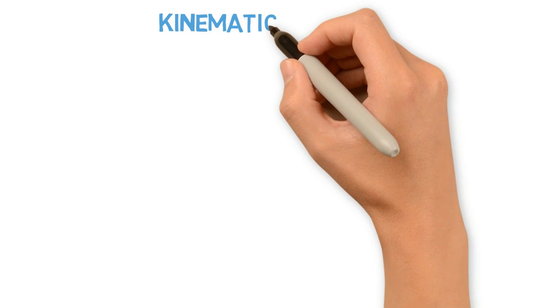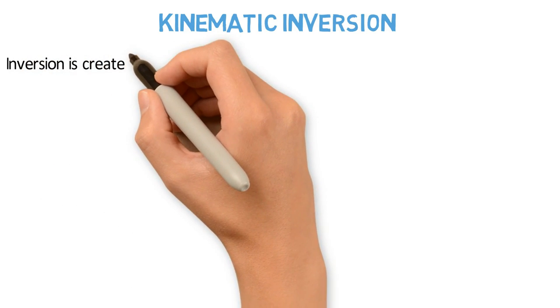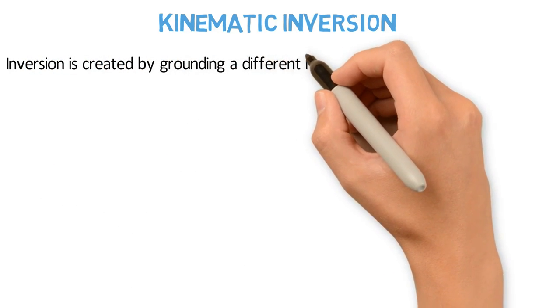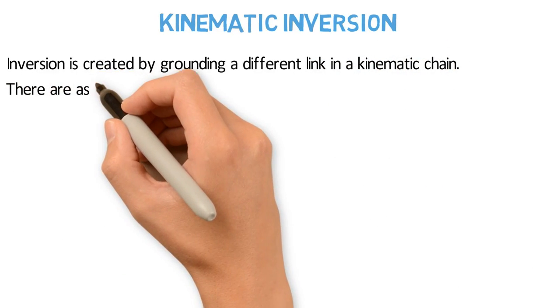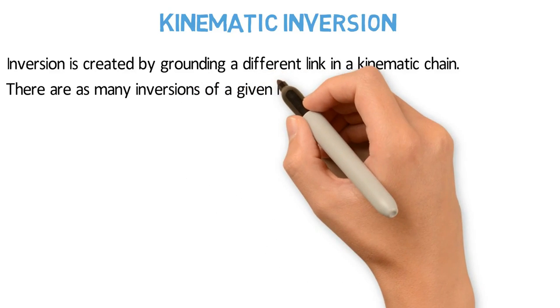Hello guys, in this video we will discuss Kinematic Inversion. Inversion is created by grounding a different link in a kinematic chain. There are as many inversions of a given linkage as it has links.